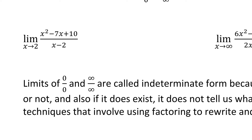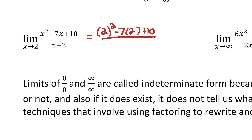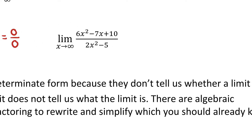The first one: we have the limit of x squared minus 7x plus 10 over x minus 2 as x approaches 2. If I were to try direct substitution — sub in 2 for each of the x's — I would have 2 squared minus 7 times 2 plus 10 all over 2 minus 2. In the numerator I have 4 minus 14 plus 10, that's 0. In the denominator I have 2 minus 2, that's 0. So this is indeterminate form of type 0 over 0.